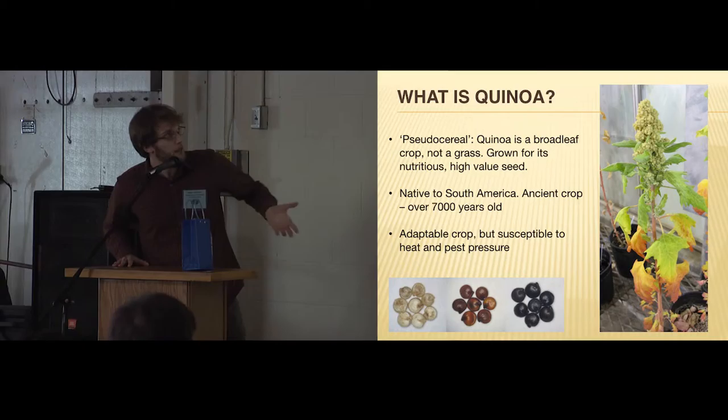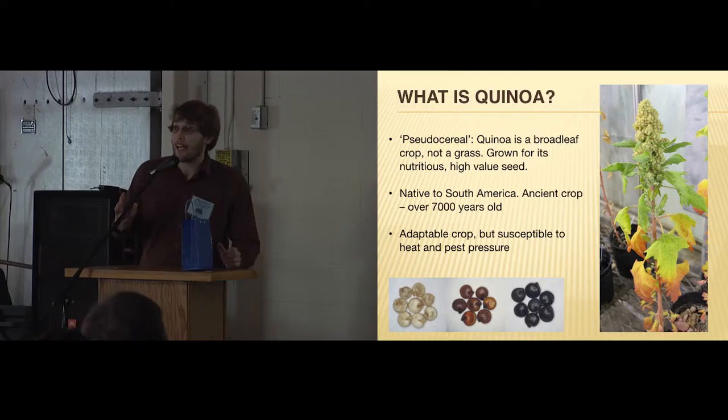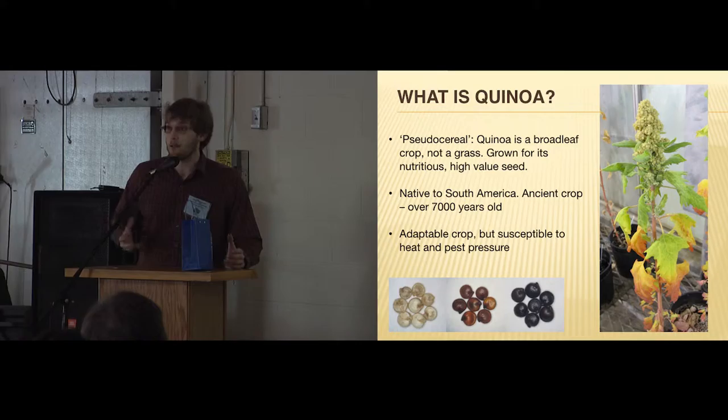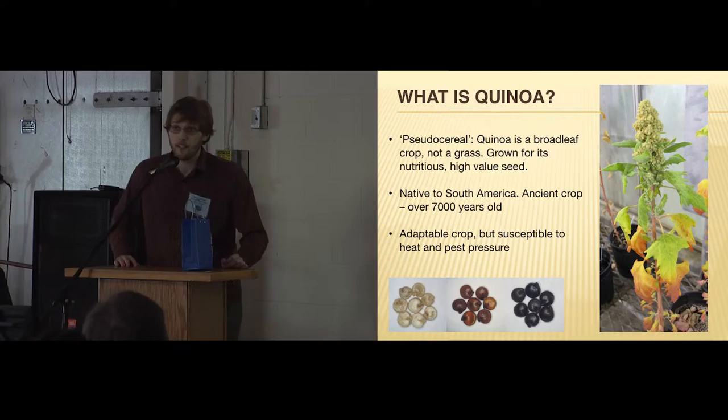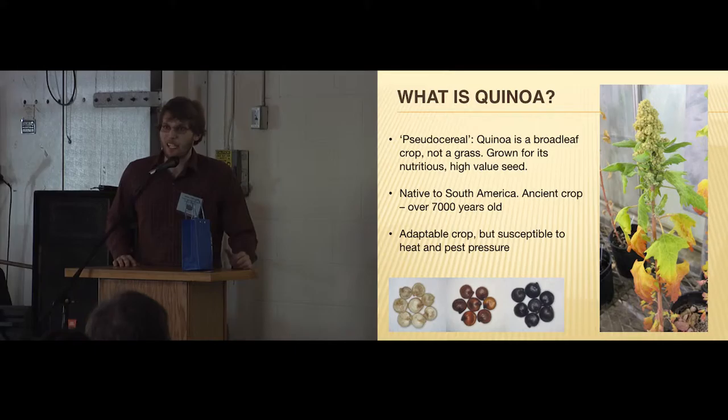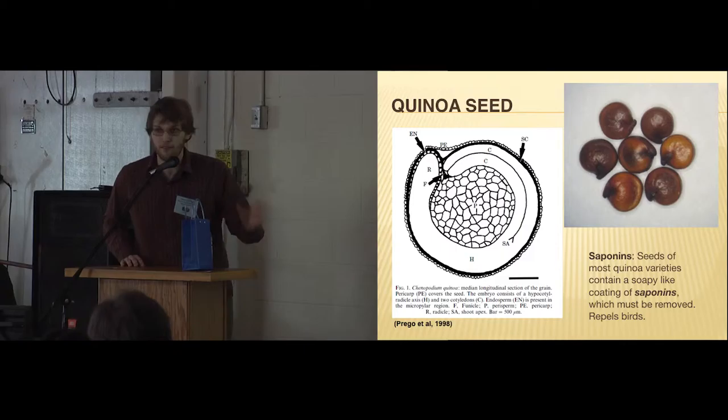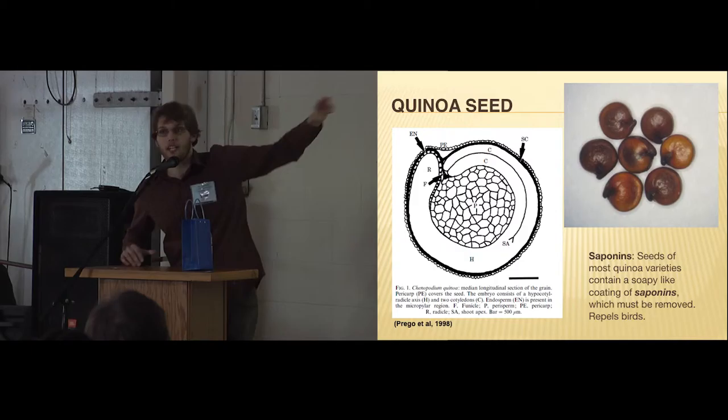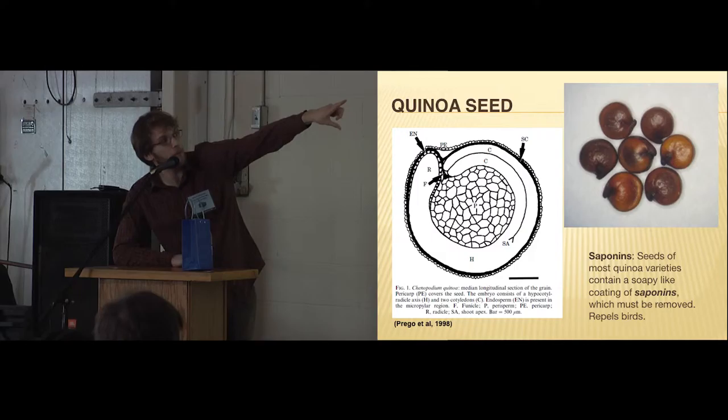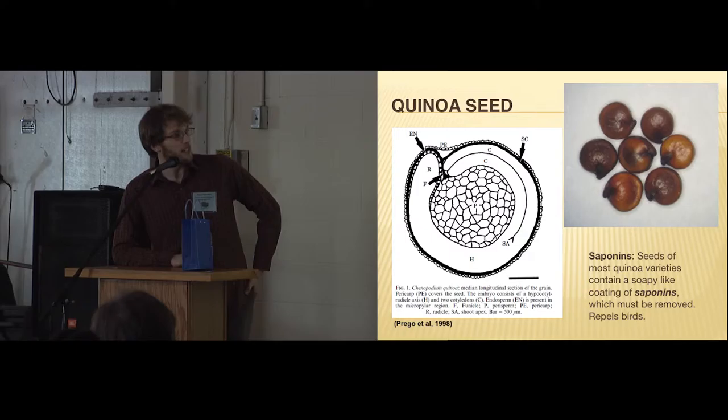First off, a short bit about quinoa. What is it actually? It's not technically a grain because it's not a grass. It's a broadleaf crop, so it's classified as a pseudo cereal like buckwheat or amaranth. But it is grown for its seed like similar to a grain. It's native to South America and fairly ancient as a crop, grown for at least 7,000 years. Overall it can be very adaptable in some ways but it's also very susceptible particularly to heat and some pest issues. Here's a close-up of a quinoa seed if you haven't looked at one closely. They're coin shaped with a small tail. The embryo wraps around the outside and that's what will sprout. The center is where the starch is at.